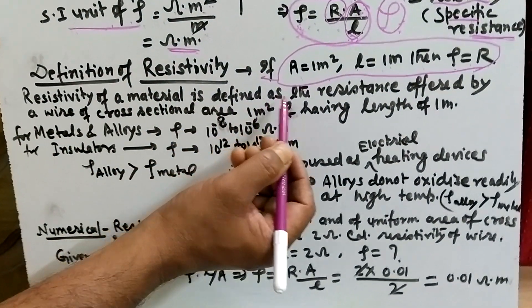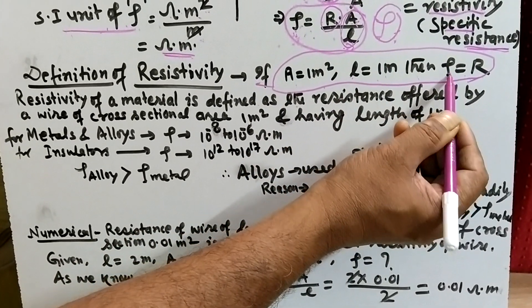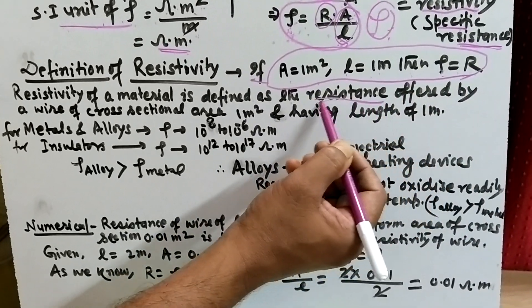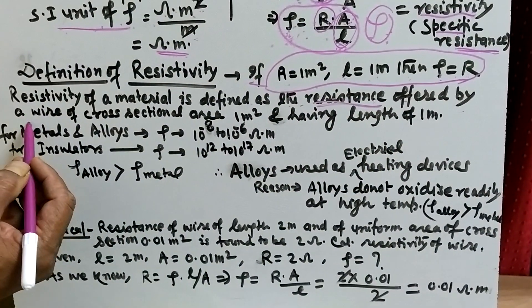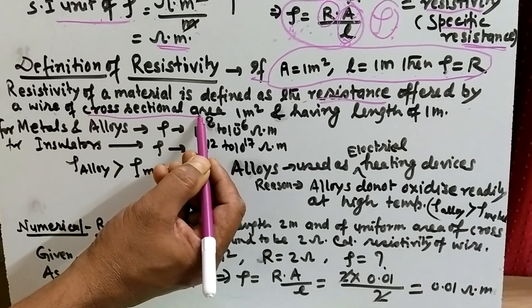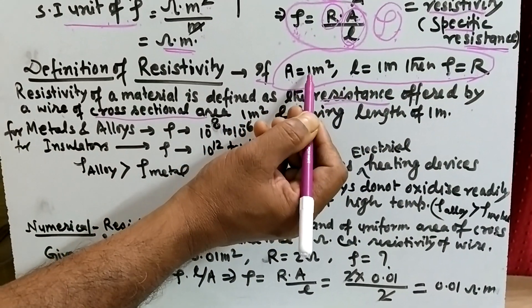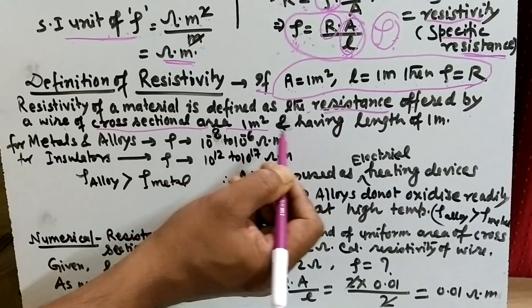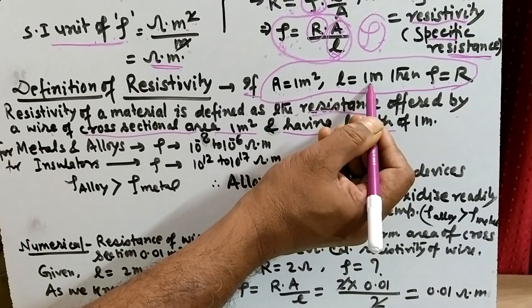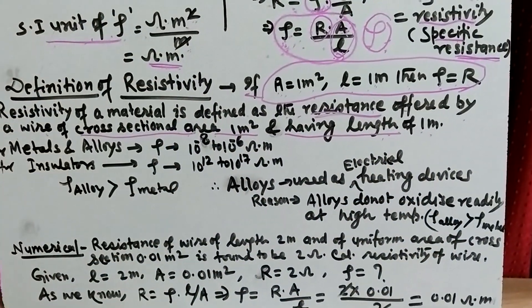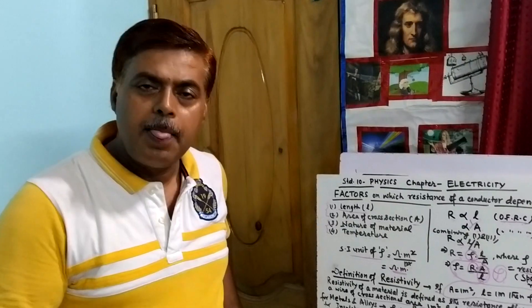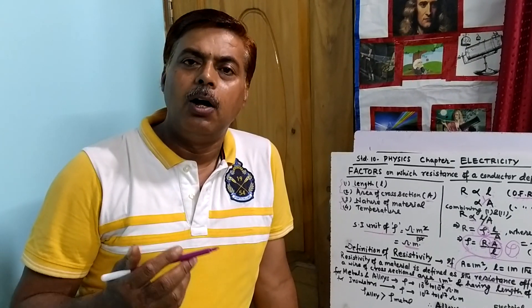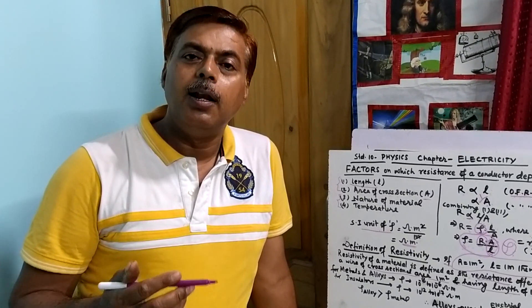Resistivity of a material is defined as the resistance offered by a wire of cross sectional area equal to 1 meter square. A is the cross sectional area, which equals 1 meter square. So the definition is: resistivity of a material can be defined as the resistance of a wire having cross sectional area 1 meter square and having length 1 meter.